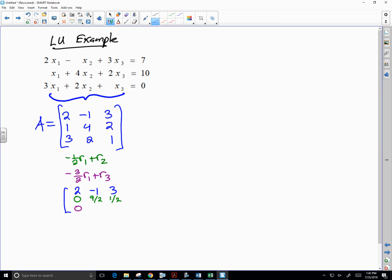And we're going to have 3 halves plus 4 halves is 7 halves. Negative 9 halves plus 2 halves is negative 7 halves.